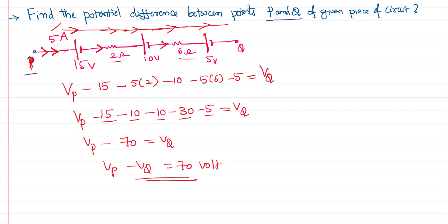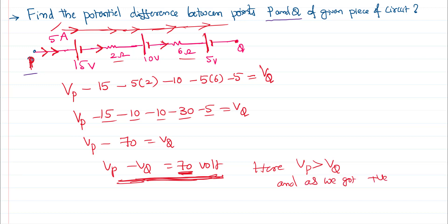So the problem is solved — the potential difference between the two points is 70 volts. We assumed that point P has a potential greater than that of point Q. If our assumption were wrong, we would have gotten a negative answer, and we could say the potential at Q is greater than P. Since we got a positive answer, our assumption is correct. That's how we solve this kind of problem.